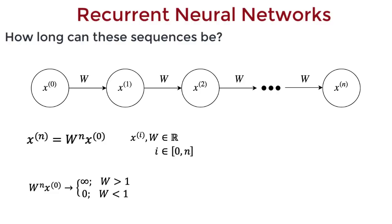And if w is slightly less than 1, then w to the n x0 would tend to 0, or would vanish.